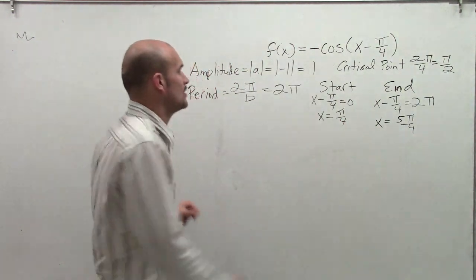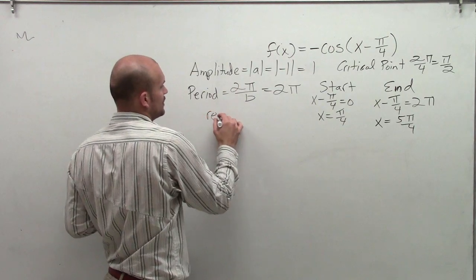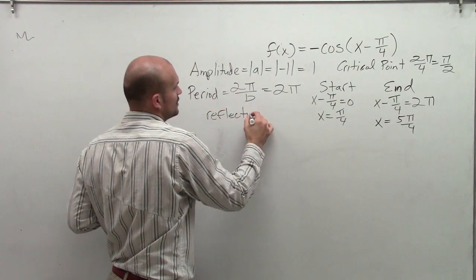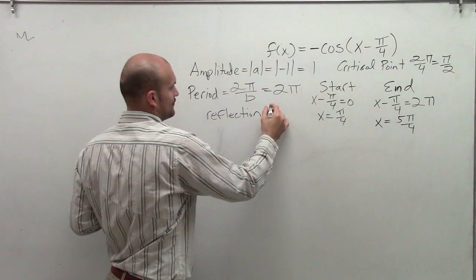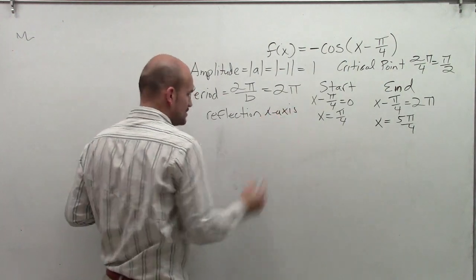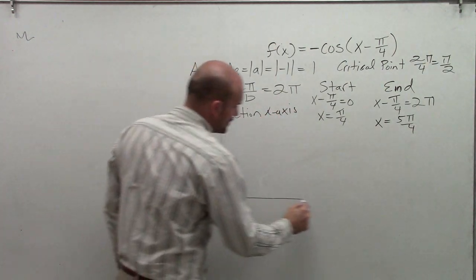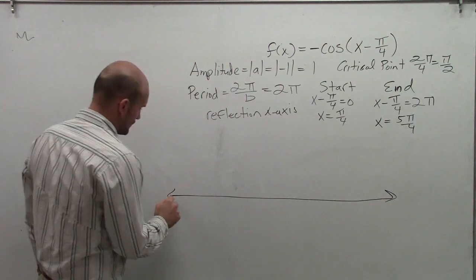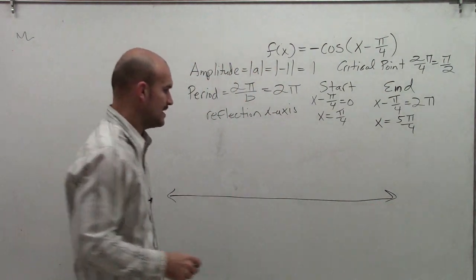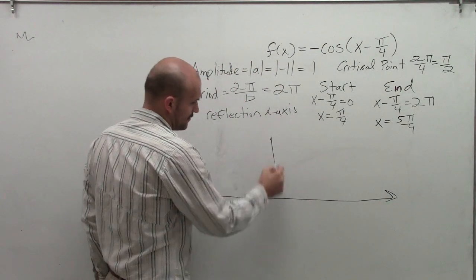The next thing we also need to notice is we have a negative cosine, meaning we're going to have a reflection of the x-axis. So the first thing to do to graph this is we're going to graph this on an x and y-axis.